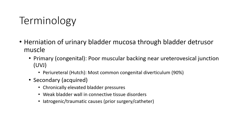Bladder diverticulum is a herniation of the urinary bladder mucosa through the bladder detrusor muscle. Primary cases involve poor muscle backing near the ureterovesical junction. Buried ureteral orifice is the most common finding, accounting for 90%. Secondary cases require chronic, markedly elevated bladder pressure, weak bladder wall, connective tissue disorder, or iatrogenic/traumatic causes.